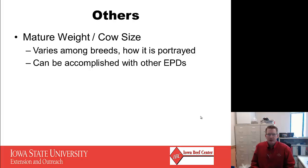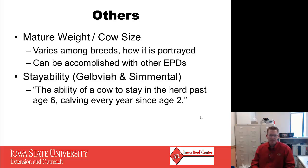Other traits that may indicate maternal ability include mature weight and cow size — not necessarily their ability, but the ability for them to be profitable in your operation. This varies among breeds and can be tracked through other EPDs or dollar indexes. Stayability is a good trait defined as the ability of a cow to stay in the herd past age six, calving every year since age two. Gelbvieh and Simmental have used this trait, though it has received some criticism because stayability moves with the expansion or retraction of the cow herd — it becomes easier to achieve during herd expansion.